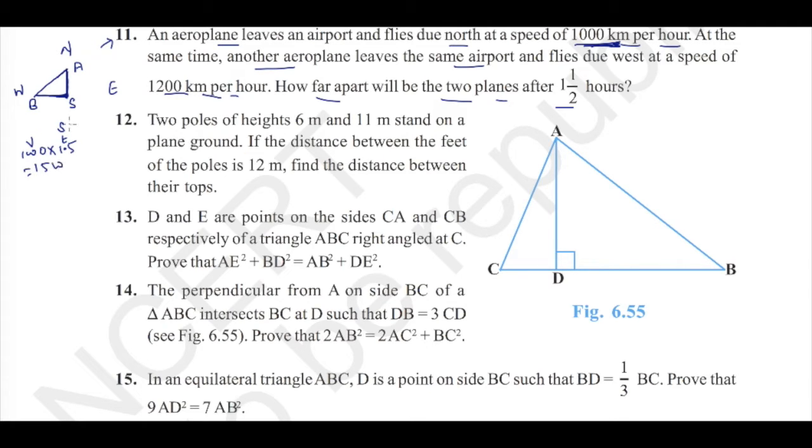So 1500 km and B might have travelled 1200 into 1.5 equal to 1800 km. This is 1800. AB is nothing but by Pythagoras theorem, it is square root of AS square plus BS square, which is root of 1800 square plus 1500 square.